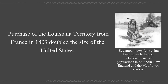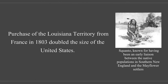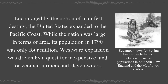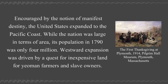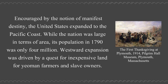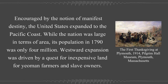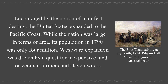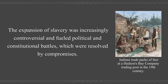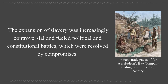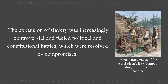Purchase of the Louisiana Territory from France in 1803 doubled the size of the United States. Encouraged by the notion of Manifest Destiny, the United States expanded to the Pacific Coast. While the nation was large in terms of area, its population in 1790 was only four million. Westward expansion was driven by a quest for inexpensive land for yeoman farmers and slave owners. The expansion of slavery was increasingly controversial and fueled political and constitutional battles, which were resolved by compromises.